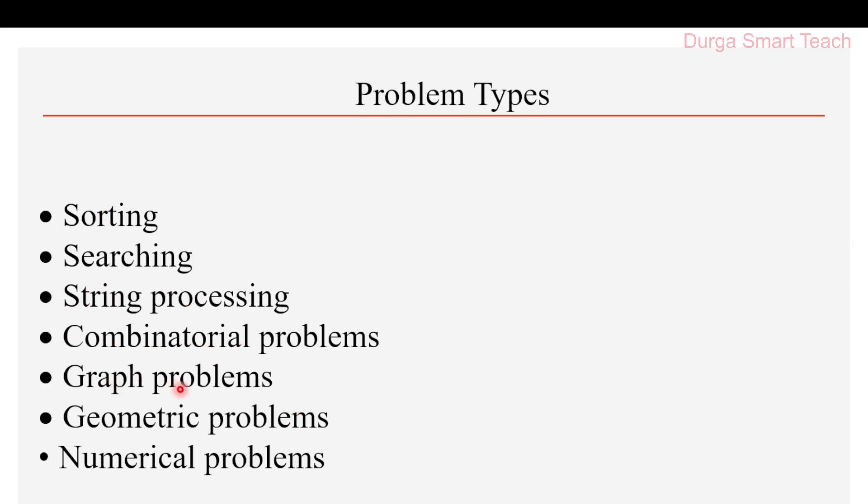So these are some examples of problem types — in total seven: sorting, searching, string processing, combinatorial problems, graph problems, geometric problems, and numerical problems. I hope it is clear. If you have any doubts regarding this video, please comment in the comment section. For more videos, please subscribe to my channel. Thank you.